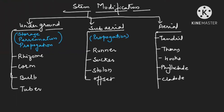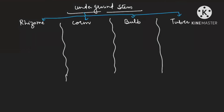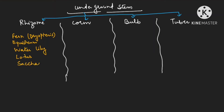These are the few examples of aerial stem. For competitive exams, examples are very important. Examples for rhizome: ferns — pteridophyte, Dryopteris, Equisetum — then water lily, lotus, sugarcane (also known as Saccharum), ginger, turmeric, and Canna.